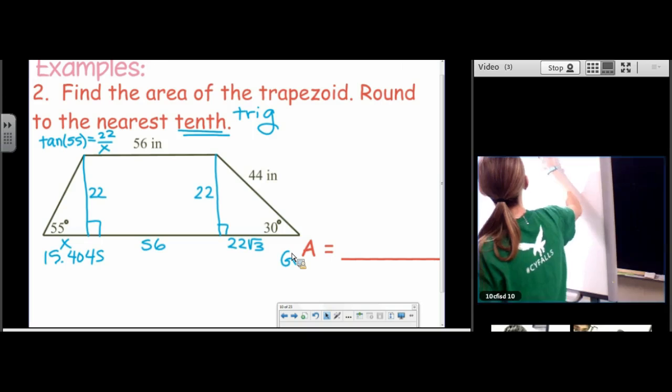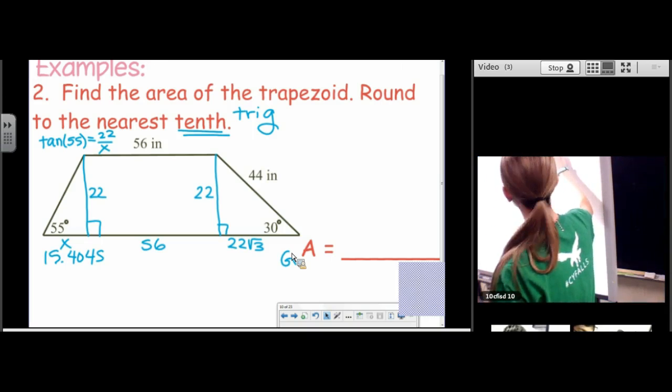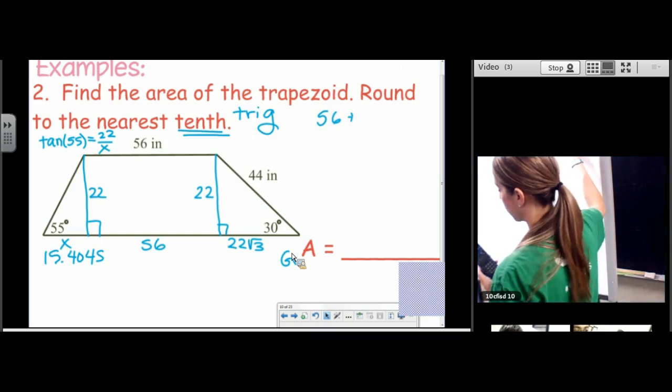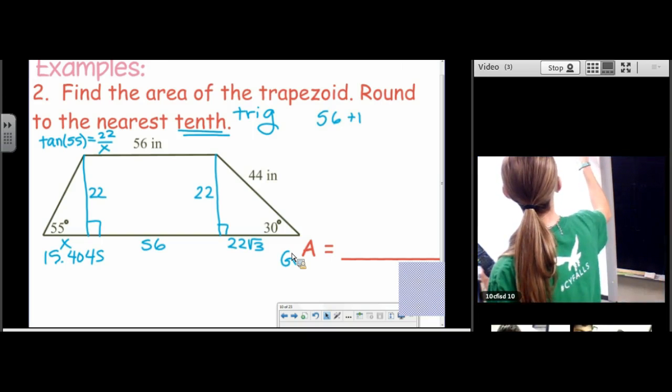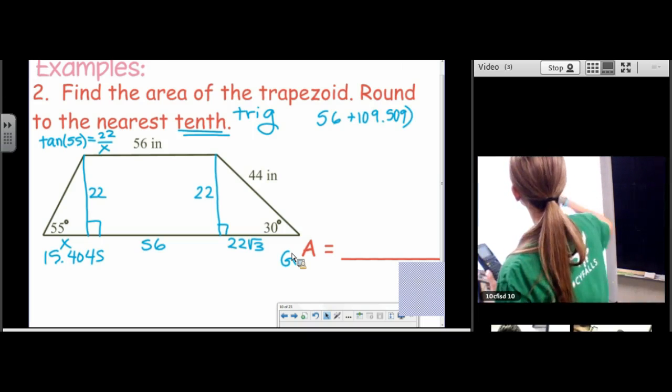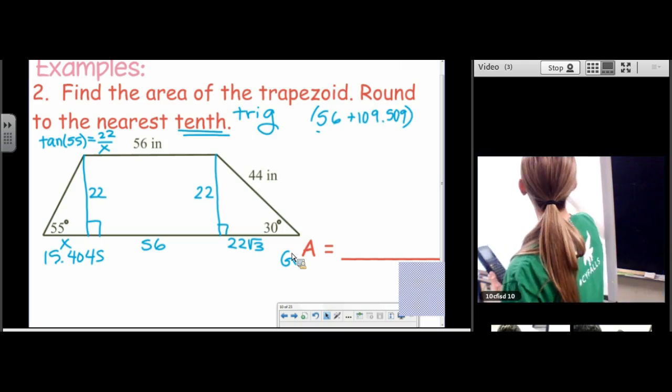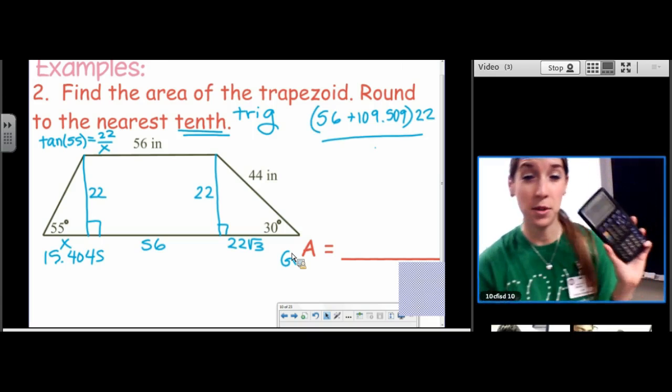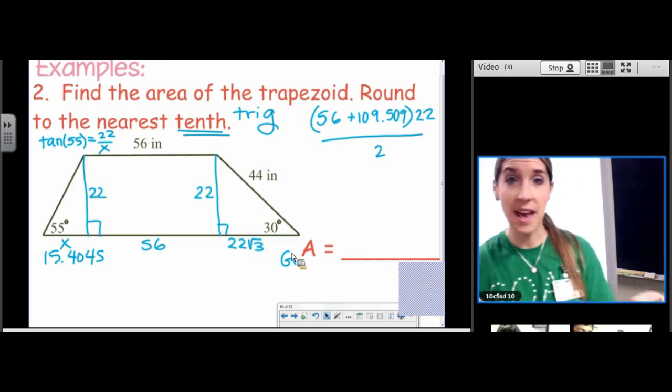So I'm getting, for base 1, 56. For base 2, 109.509. times the height, divided by 2. If you can keep that long decimal in your calculator and just keep working with that one, that would be great.